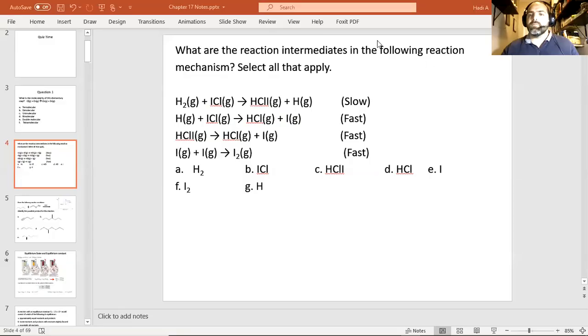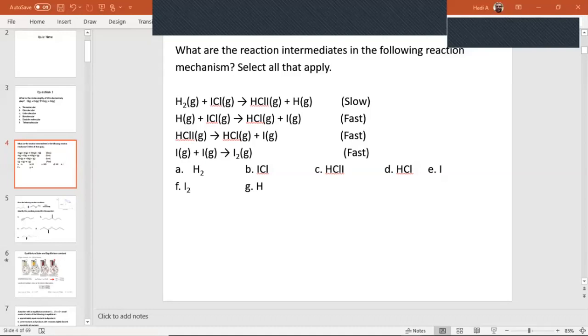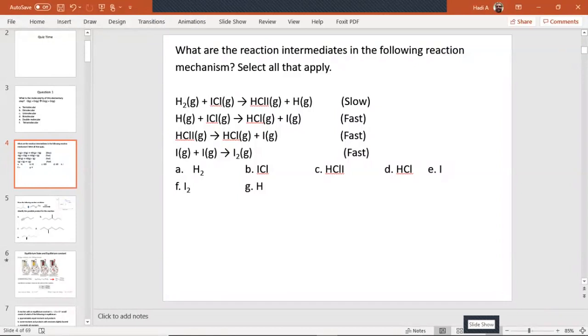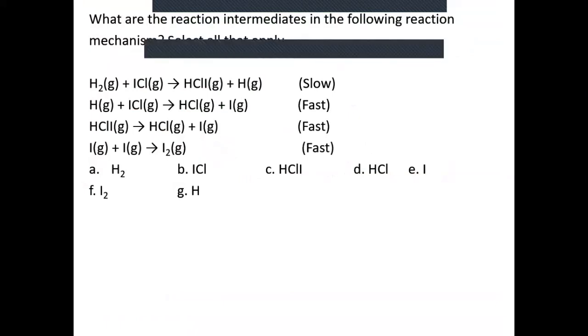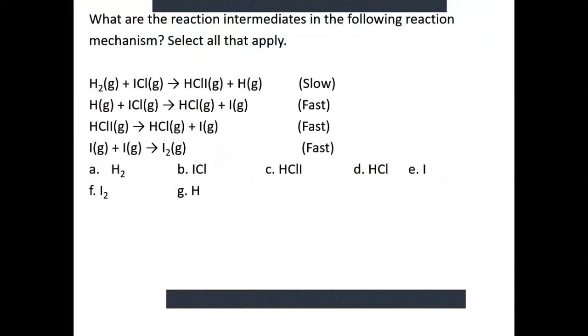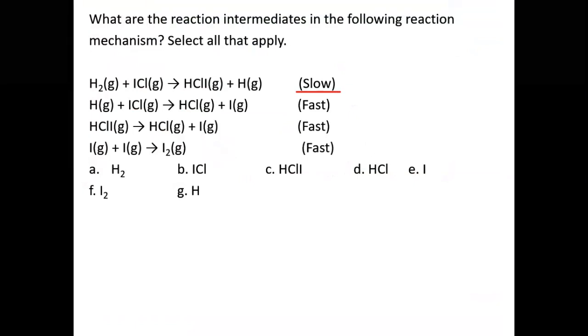On that note, we'll go ahead and get started with today's lecture. We're going to start off with a little quiz from what we talked about last lecture, which was mechanisms and energy diagrams. Here we have a simple question: what are the reaction intermediates in the following mechanism? This mechanism has four steps, and the first step is the slow step.